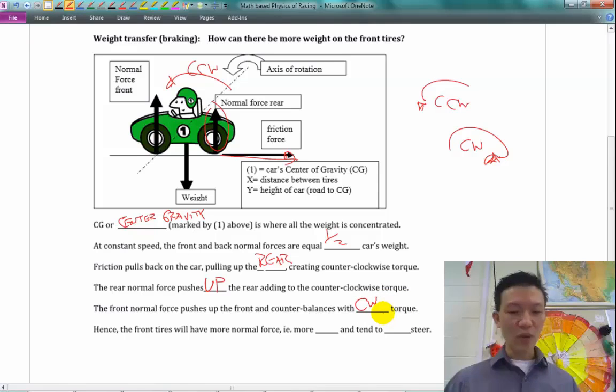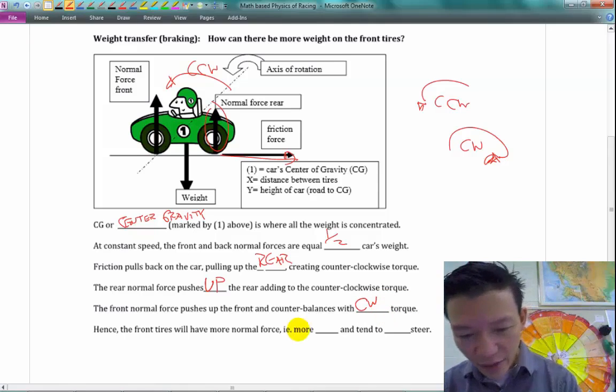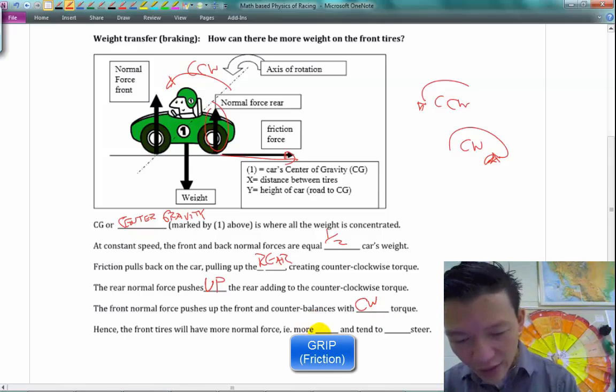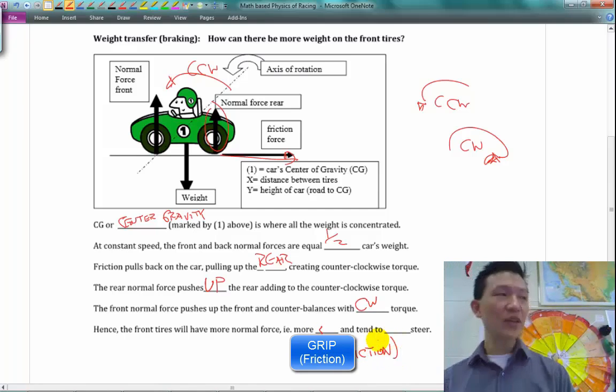It's just realizing where you're getting more or less grip. So since the front tires have more normal force, it's going to have more friction. The fancy term for that is grip, in terms of racing terminology. You basically have more friction.